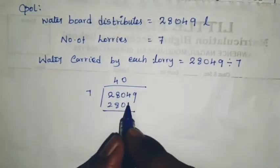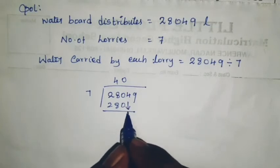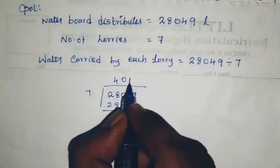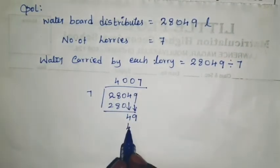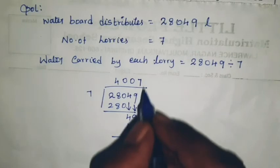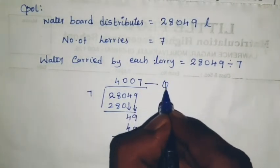Again, 4 over. Again, zero. Again, 9. Seven sevens are 49, so remainder zero. Answer complete.